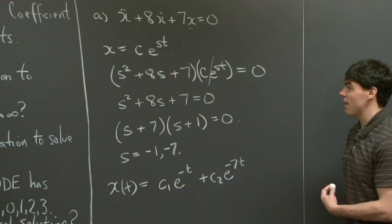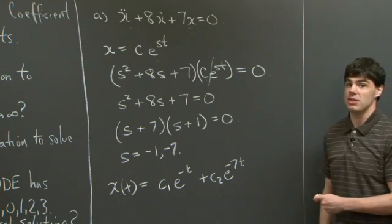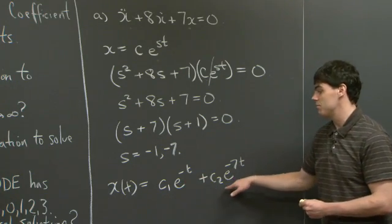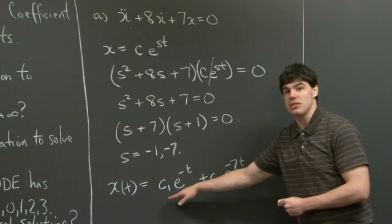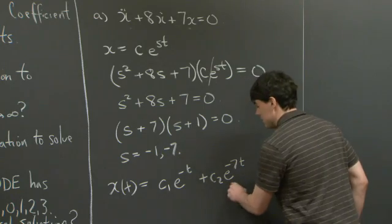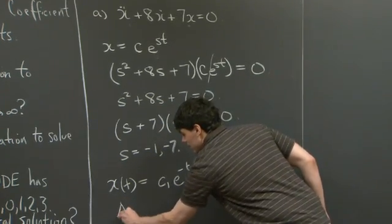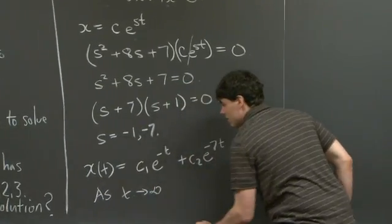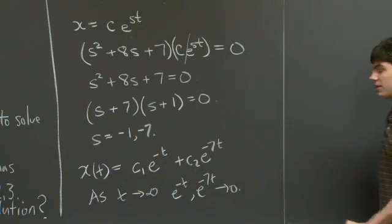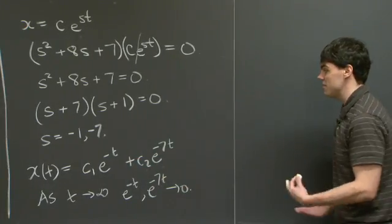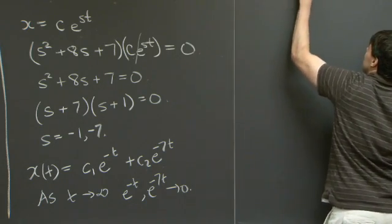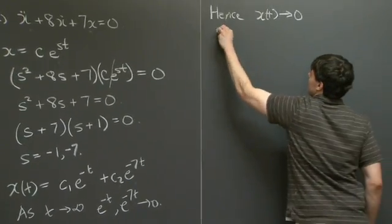As part of part a, we're also asked: for any solution to this differential equation, does the solution go to 0 as t goes to infinity? Well, the general solution is c1·e^(-t) + c2·e^(-7t). We see that no matter what c1 and c2 are, as t goes to infinity, e^(-t) goes to 0 and e^(-7t) also goes to 0. So any constant times e^(-t) plus any constant times e^(-7t) must also go to 0. Hence, x(t) goes to 0 as t goes to infinity.